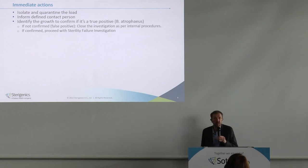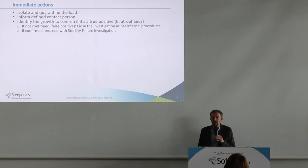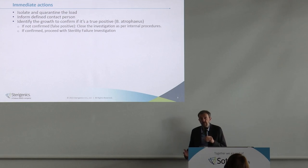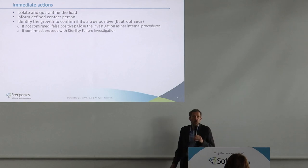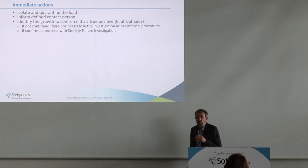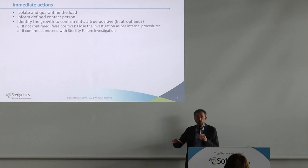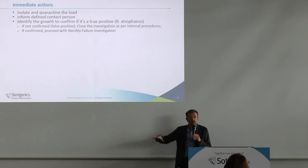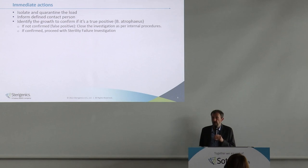The first basic step is making sure we have a true positive. We need to identify the growth obtained, and if we have a good likelihood that it is a true positive, then we can start investigation. If it's a false positive — lab contamination can happen; we are not always bulletproof — then we have internal procedures to deal with that. We explain it was an external contamination, invalidate the test results, and inform the customer that we had an issue but it has been resolved.